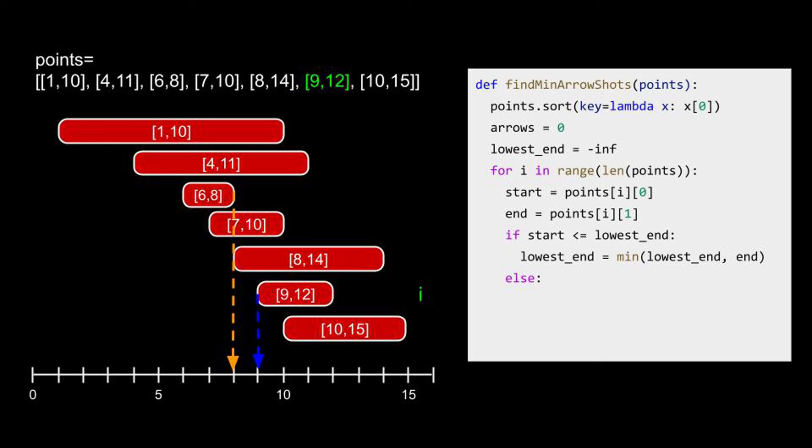If the start is higher than the lowest end point, we fire an arrow at the lowest end point, popping all earlier balloons and reset the lowest end point to the end point of this current balloon.